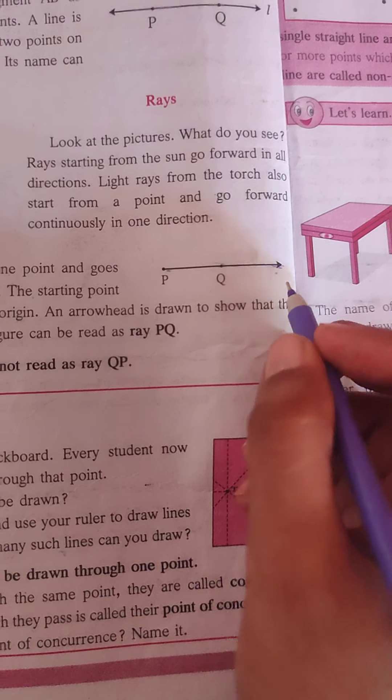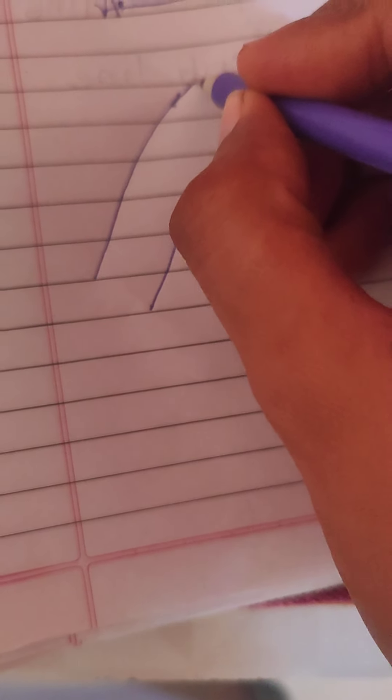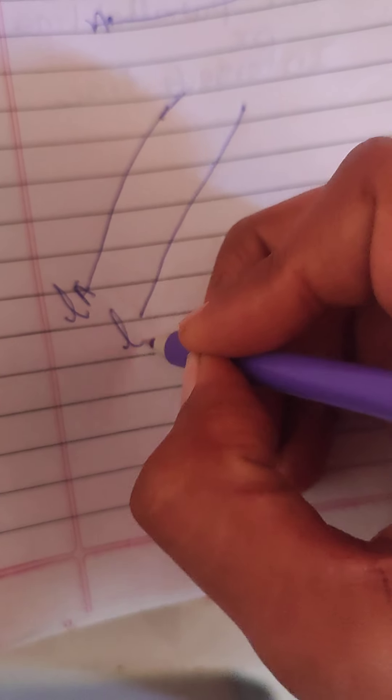And next we learn about parallel lines. Parallel lines mean this line, parallel line, line A, line B. It is a parallel line. Not intersect line, not intersecting lines.